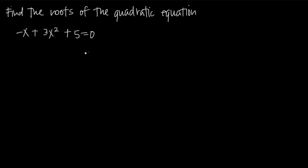Normally when we're given a quadratic equation, the first thing we want to do is make sure that our terms are in descending order, which means we take the highest degree terms — the terms with the largest exponents — and put them first, then we take the terms with the smallest exponents and put them last. This means we have to reorder this as 3x squared minus x plus 5 equals 0.